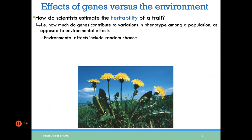How do scientists evaluate the heritability of a trait — what are the different contributions of genes versus the environment? Heritability asks how much genes contribute to variations in phenotype among a population, as opposed to environmental effects. If I see differences in a population, are those differences due to genes, the environment, or some combination? When we say environmental effects, that also includes random chance. Heritability asks: how much of that variability is just due to genes alone?